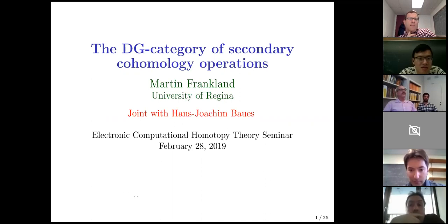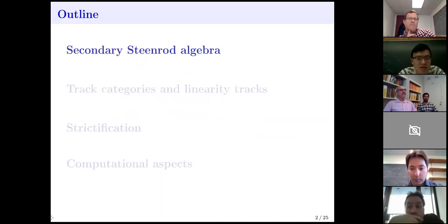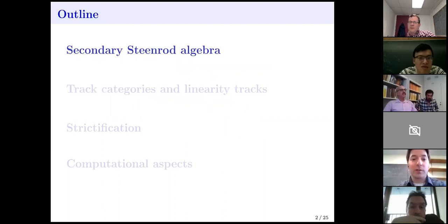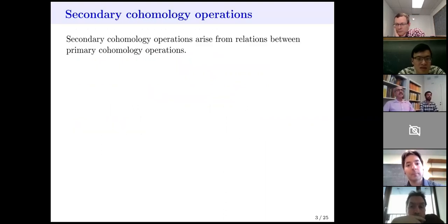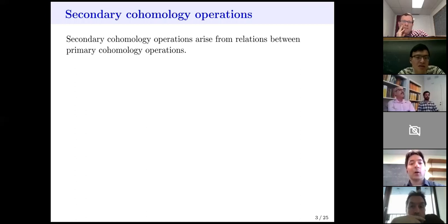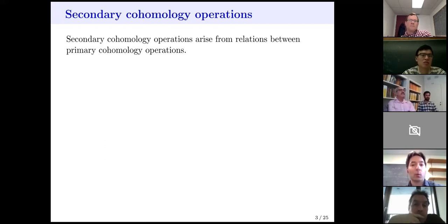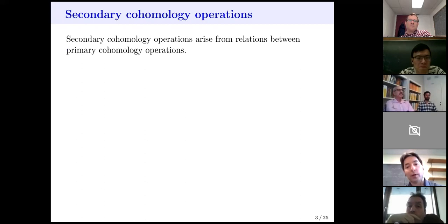First, a bit of background about secondary cohomology operations and the secondary Steenrod algebra. What is a secondary cohomology operation? There are different approaches to making that precise and rigorous, but the rough idea is that you get a secondary operation whenever you have a relation between two primary operations.